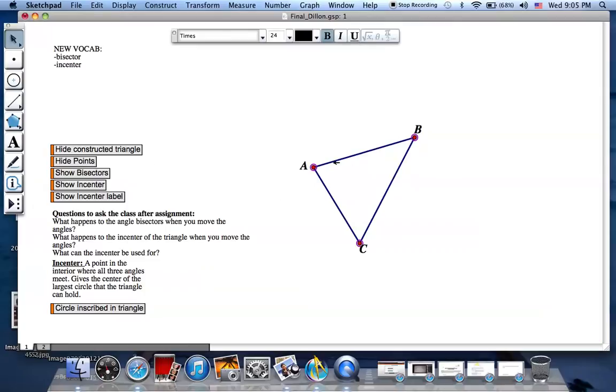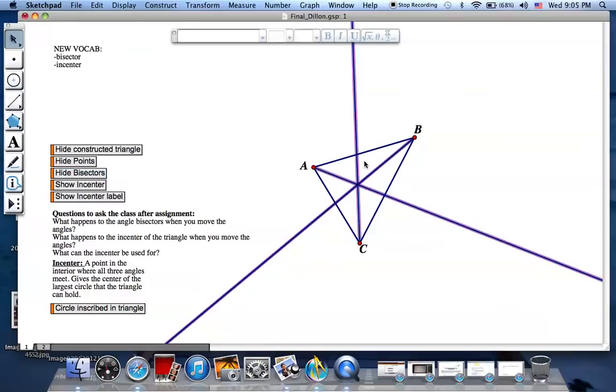And then we're going to bisect every angle. And this is what it's going to look like with all three angles bisected. And notice that all three angles meet at one unique point, and that unique point is called the in-center. We will label that point in-center. And just at this point, most of our construction is done.